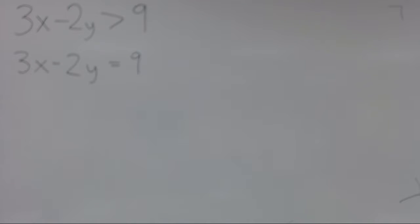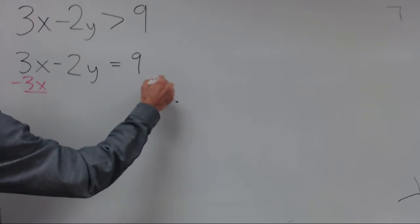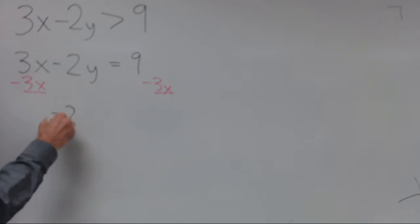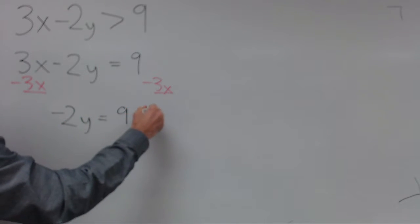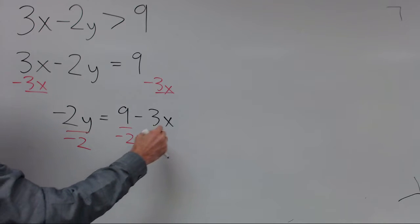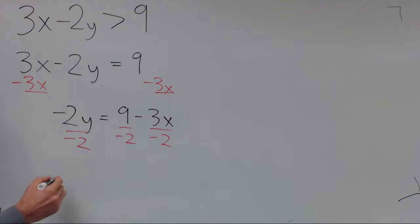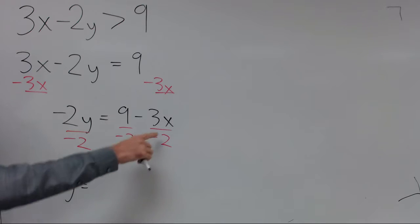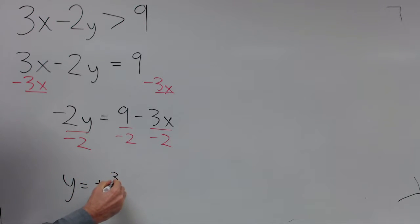So let's subtract 3x from both sides, and then divide everything by negative 2, and let's put the x term first.